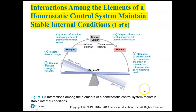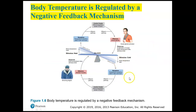Now looking at the whole picture in response to body temperature: body temperature rises — that's the stimulus. Receptors are temperature-sensitive cells in the skin and the brain. The control center is the hypothalamus, the thermoregulatory center in the brain. The control center sends information to the sweat glands, which become activated, release sweat, and the evaporation of sweat causes body temperature to fall.